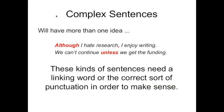You have complex sentences as well in every language. Here, you'll have more than one idea in the sentence. For example, 'although I hate research, I enjoy writing' or 'we can't continue unless we get the funding.' These kinds of sentences need some sort of a linking word or correct punctuation in order for them to make sense. If we break it down: subject 'I,' verb 'hate,' object 'research' — that's a complete thought. And 'I enjoy writing' is also a complete thought. We have two separate ideas, so we can't just stick them together with a comma as we saw on the previous slide. We need a linking word.